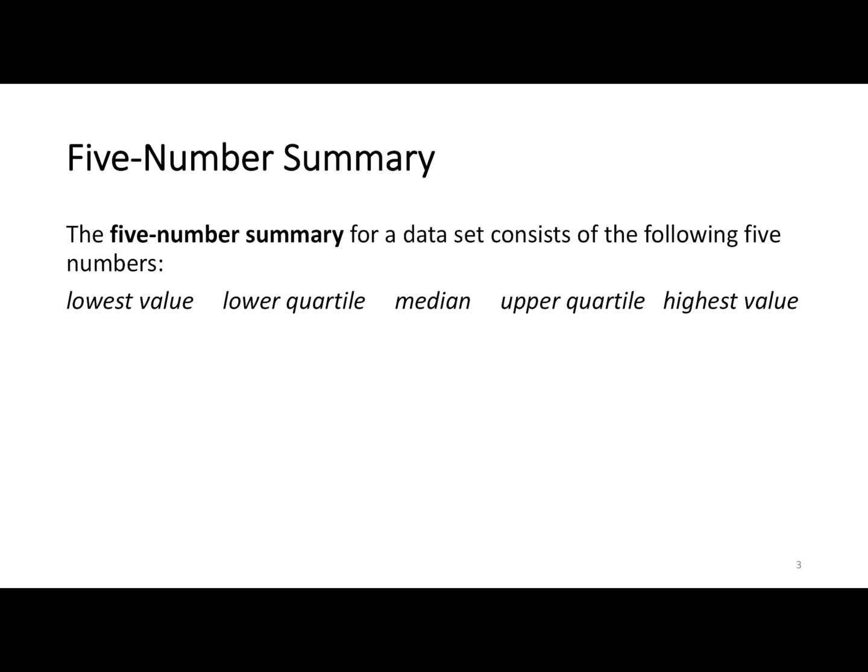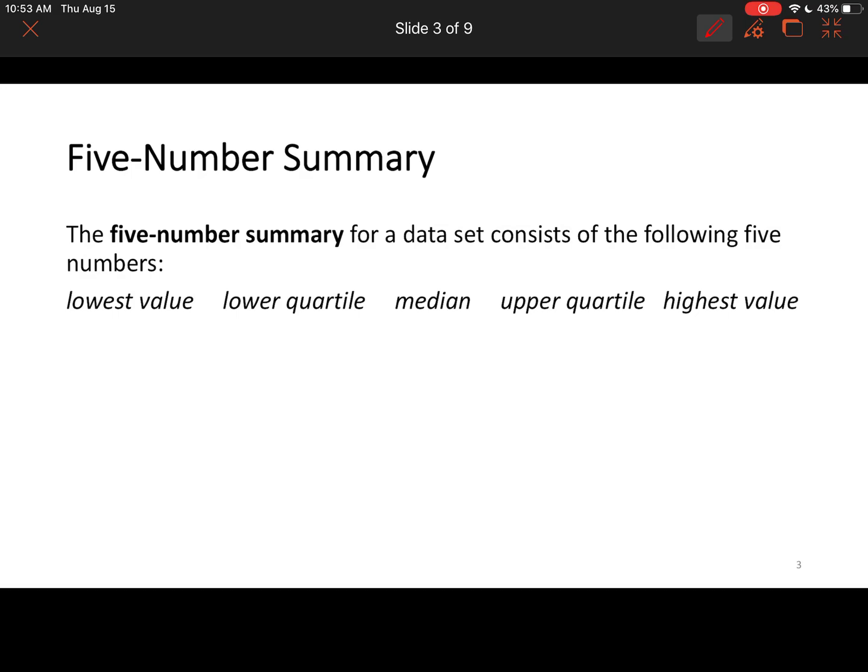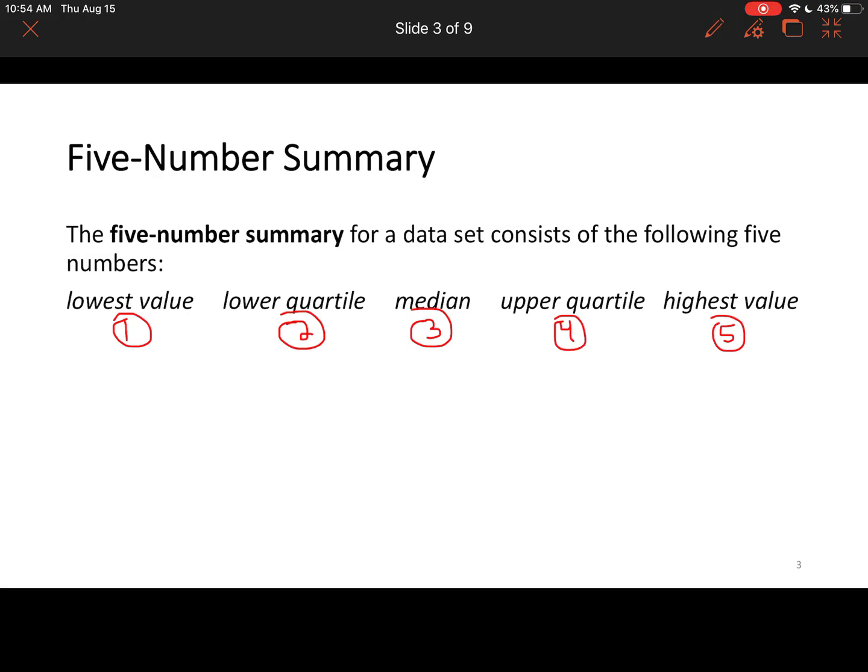All right, and so what are the five numbers? Now think about it: numbers have to be in order. You've got the lowest, lower quartile, the median, the upper quartile, and the highest value. Now, if you've got a data set with all the same values, all those numbers will be the same. So don't force it. Don't force problems to be something that they're not.